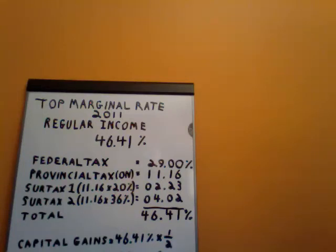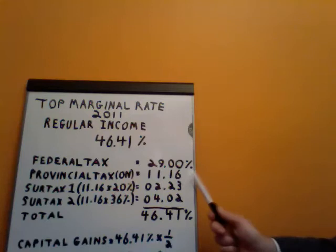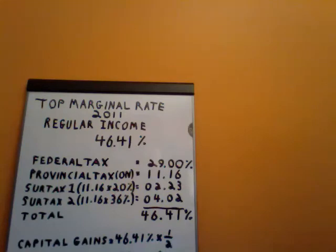Now you also pay provincial tax. When we're in Ontario, we're paying at the top marginal rate of 11.16%. This kicks in when you have earned $75,551 or more in Ontario.